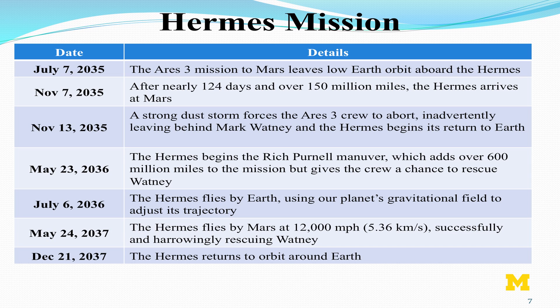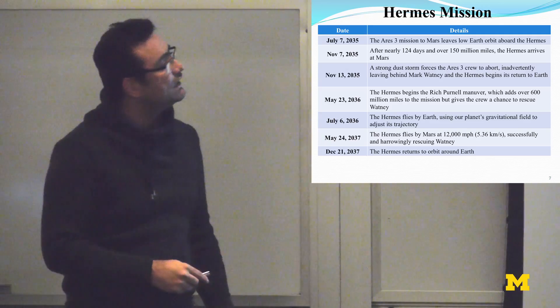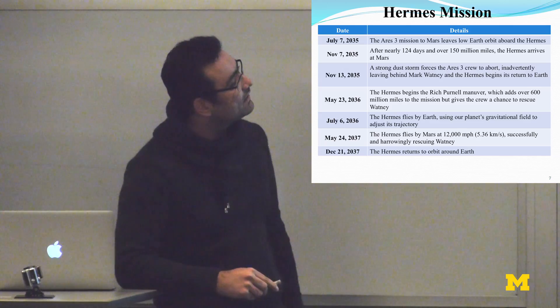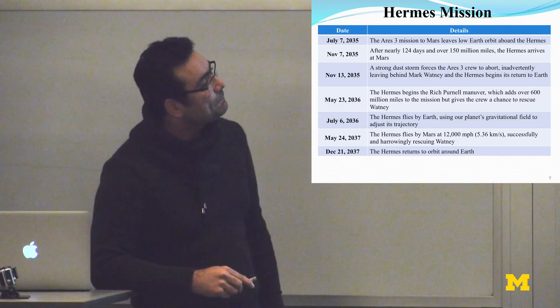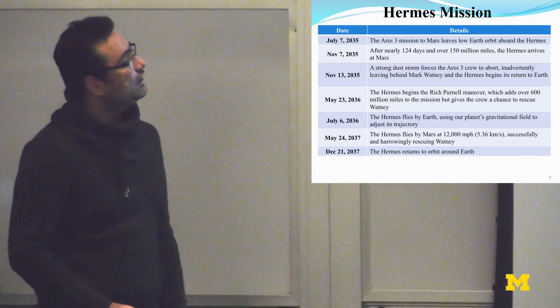For example, the Voyager missions, there is a special alignment that repeats, I think, every 128 years such that you can perform missions like Voyagers. Here is the breakdown of the Hermes mission. The first leg starts, the Aries 3 mission starts and leaves Earth on a branch and then it reaches Mars. They have 120 days of transfer in order to reach to Mars, which is at a distance of 150 million miles. Due to the storm that occurred on the surface of Mars, they have to abort the mission, but inadvertently, they leave behind Mark Watney and then they have to return to Earth.